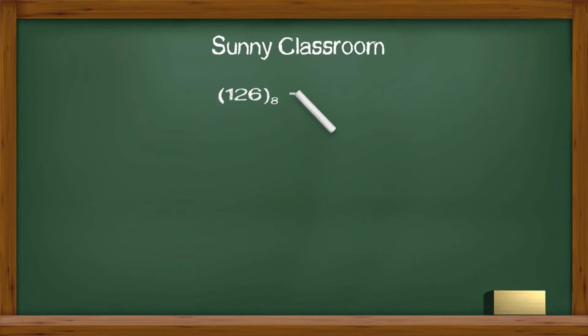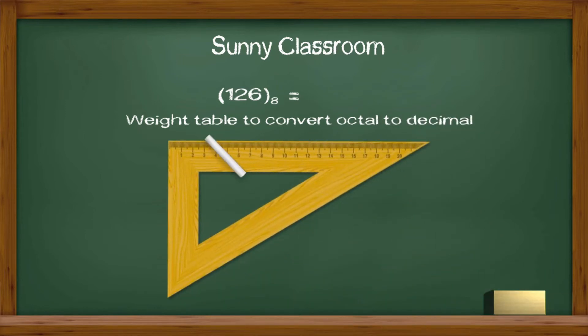Let's see two examples. Example 1. Convert octal number 126 to decimal. First, let's draw a weight table, which we will use in the example.